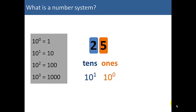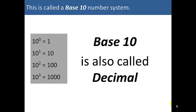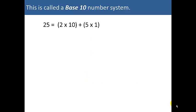So it's basically how a number system works. This is the decimal number system, which is also called base 10. So 25 can be expressed as 2 times 10 plus 5 times 1, or 2 times 10 to the first power plus 5 times 10 to the 0 power.